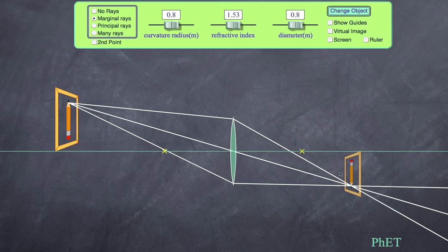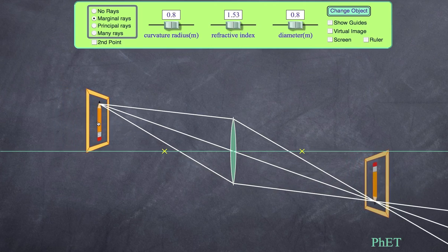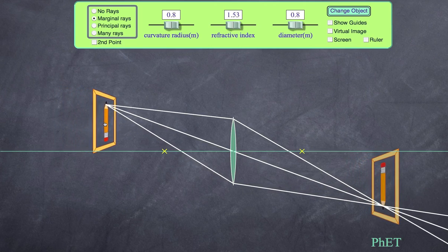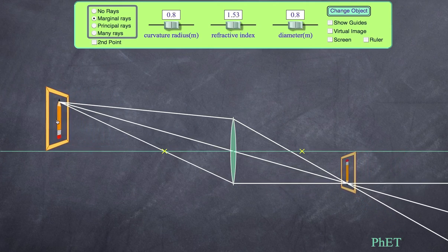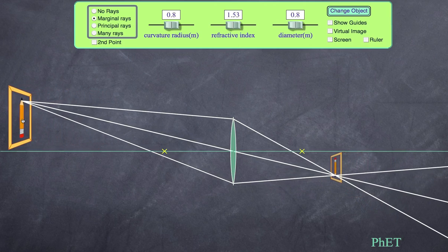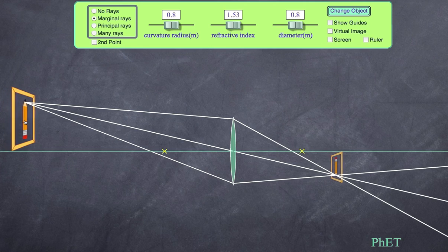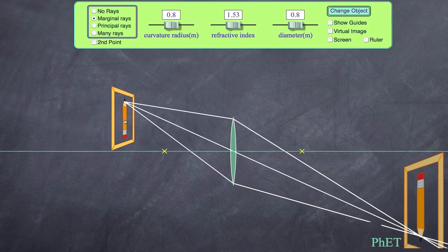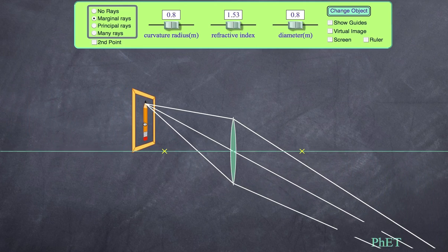Secondly, the image is in this case of a different size. If I were to move the object closer to the actual lens, you can see that the image increases and moves further away. So that's one important feature. Therefore, as I move the object away, the image gets smaller but also moves progressively closer to the focal point.